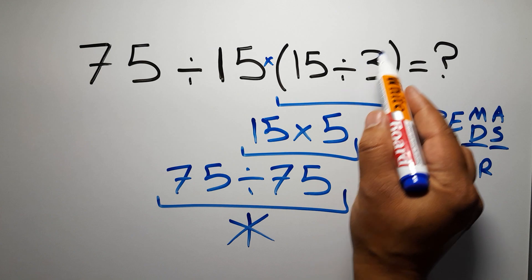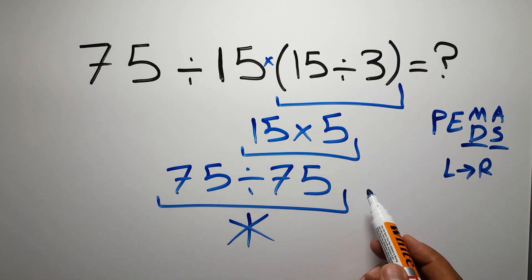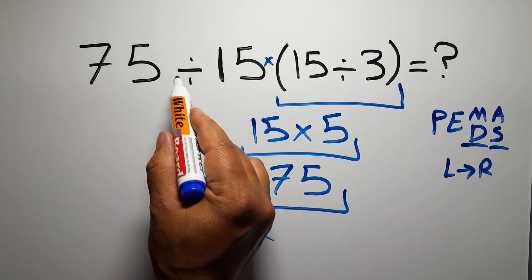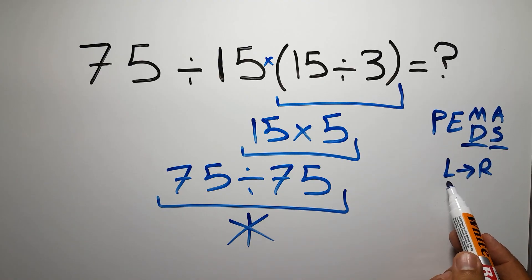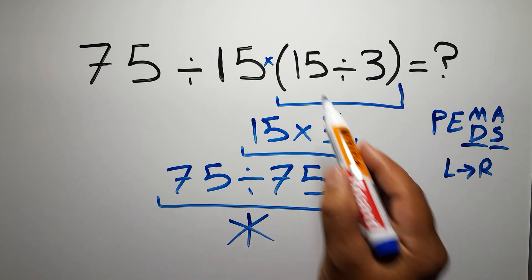So first we have to do these parentheses. After these parentheses we have one division and one multiplication. As I said, multiplication and division have equal priority and we have to work from left to right.